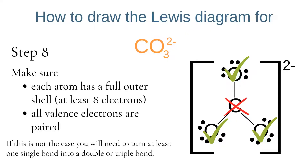Finally we need to check if our Lewis diagram is correct by making sure each atom has a full outer shell of at least 8 electrons and that all valence electrons are paired. Each of the three oxygens has 8 electrons around them, so they're stable. But when we look at carbon, it only has 3 bonding pairs of electrons — 6 in total — so it's not stable.